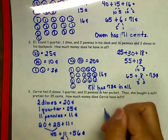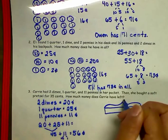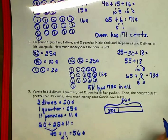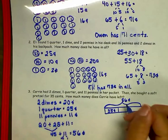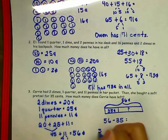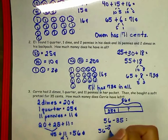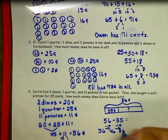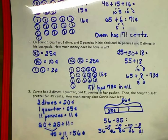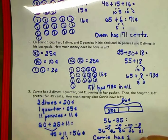Now, drawing a tape diagram, I know my total is 56 cents. She bought a pretzel for 35 cents, so I need to figure out how much money she has left. I need to subtract: 56 minus 35. Using the arrow way: 56 minus 10 is 46, minus 10 more is 36, minus 10 more is 26. I've taken away 30 so far; I need to take away 5 more. 26 minus 5 is 21. Carrie has 21 cents left.